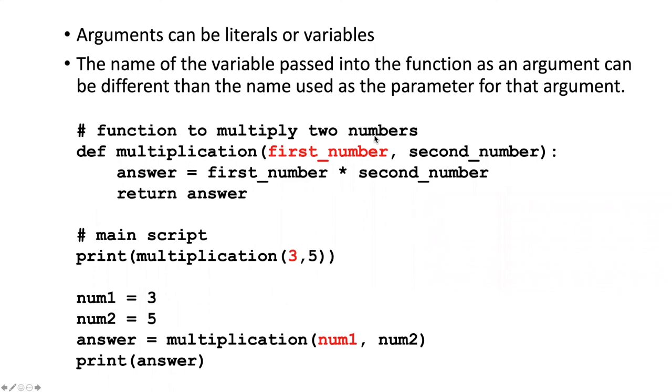So one thing that you need to distinguish between is the arguments that you're passing into the function when you're using it and the parameters where we define sort of the dummy variables that we're going to use inside the function itself. So in this example here, I have used the name first_number for the parameter of the first thing that gets passed into the function. So I use it in the code right here. When I pass the argument in for that first item that's being passed in, I do not have to use the same name as what I call the parameter.